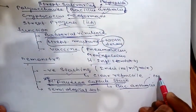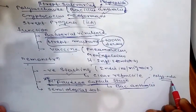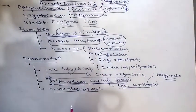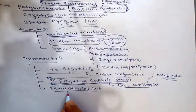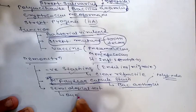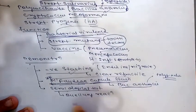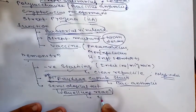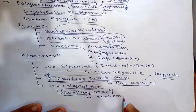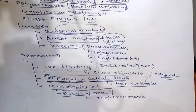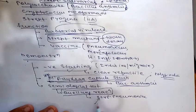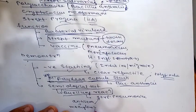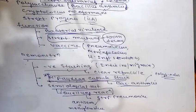Bacillus anthracis also has a polypeptide capsule — an important point. For serological testing, one method is the Quellung reaction: serotypes of Streptococcus pneumoniae capsule can be detected by adding anti-sera mixed with methylene blue, after which the capsule becomes swollen and refractile.